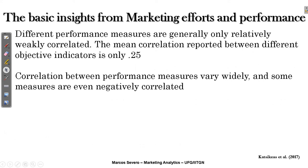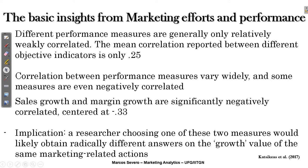Different performance measures are generally only relatively weakly correlated, and this is an interesting finding about marketing performance. The mean correlation reported between different objective indicators is only 0.25. Since correlation ranges from minus one to one — where minus one is a very strong negative correlation and one is a very strong positive correlation — a mean of 0.25 among different objective indicators points to the problem that you should use multiple performance measures as dependent variables in your models. Some measures are even negatively correlated; for example, sales growth and margin growth are significantly negatively correlated, centered at minus 0.33.